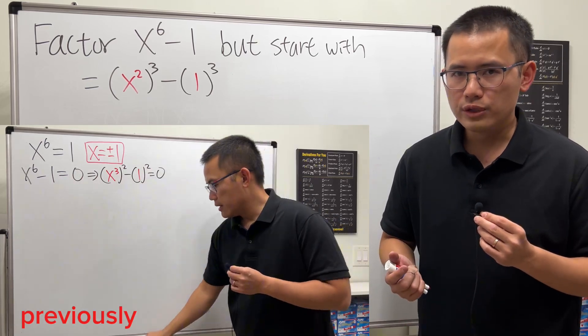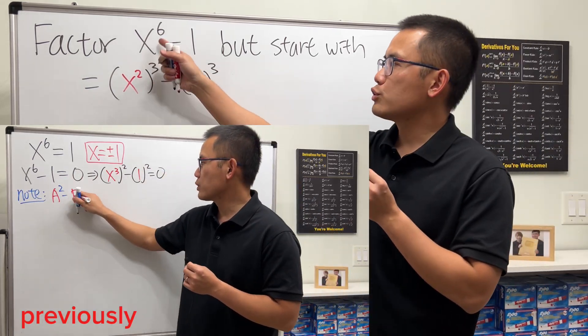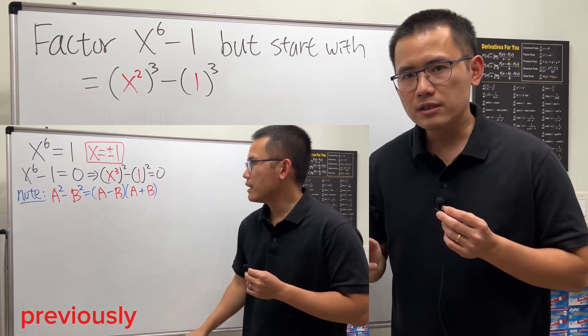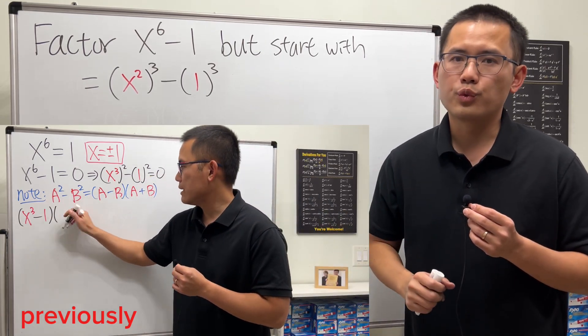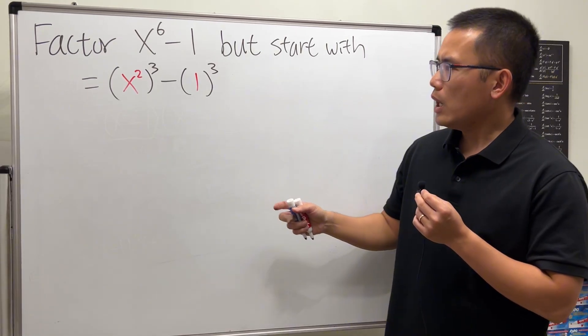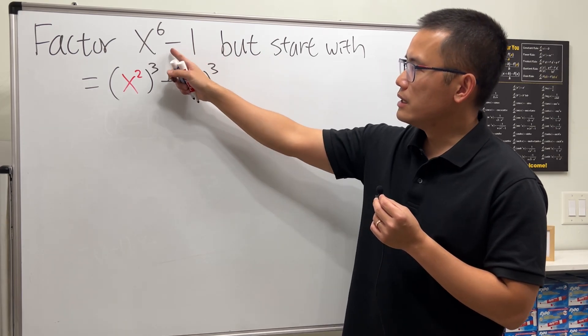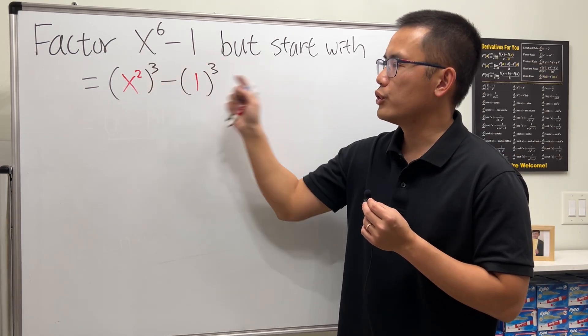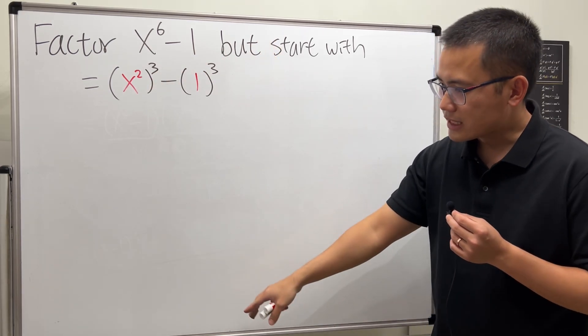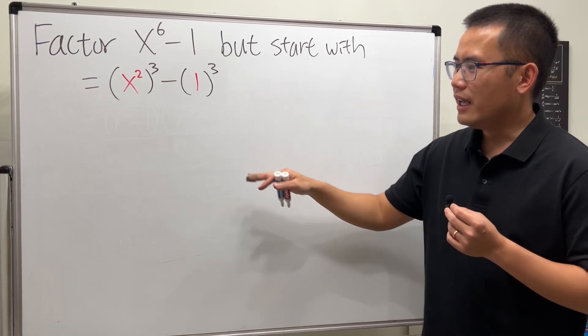In the previous video I showed you guys how to factor x to the 6th power minus 1, and we started with a difference of two squares. But now how are we going to do it if we look at this as a difference of two cubes? This is still possible but it's just going to be trickier at one step, but I will show you.